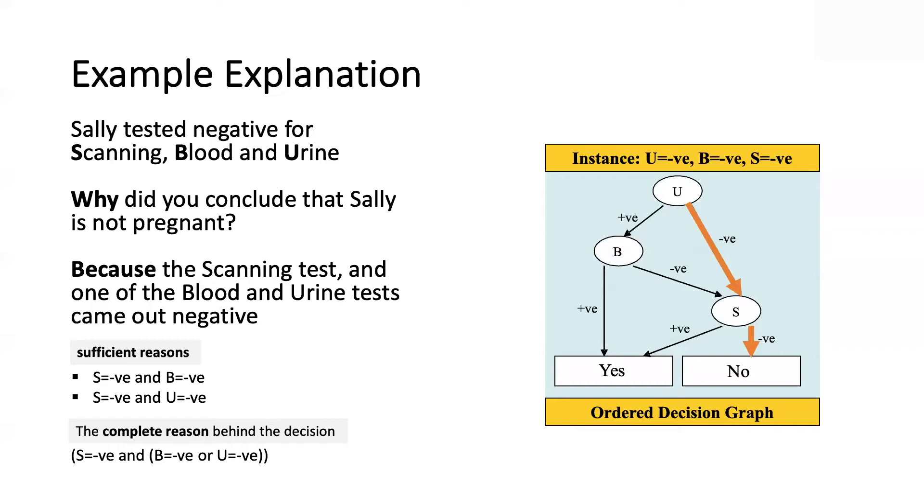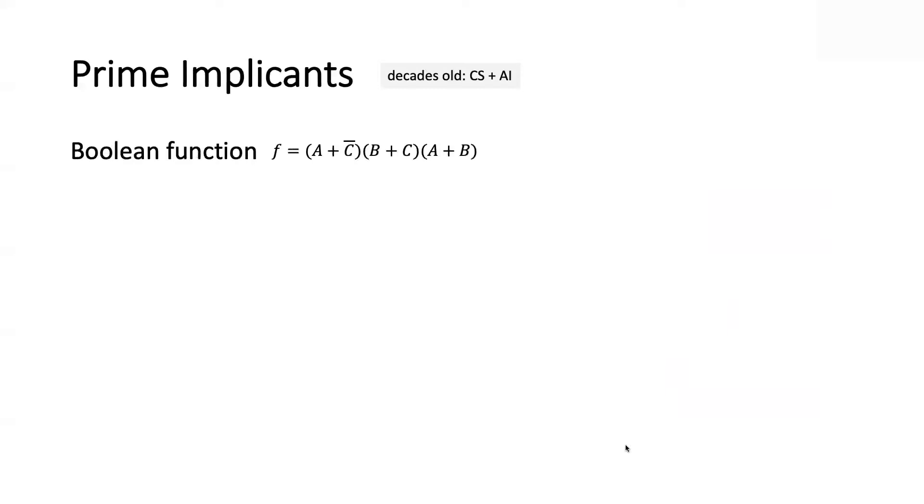Why would you want to get the complete reason, and how can you get it, and what can you do with it? But before we get to that, let me just do one more bit about the underlying theory behind all of this, which is the notion of prime implicants, which is also the reason behind the name PI explanation. This is a notion that's been in computer science for a very long time, starting with AI in particular. If you have a Boolean function, you're trying to find a minimal setting of the variables that guarantee the function to trigger.